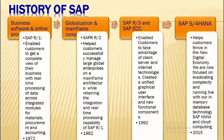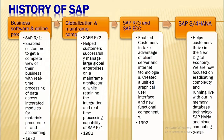SAP R/1 enabled customers to get a complete view of their business with real-time processing of data across integrated modules for materials, procurement, and accounting. SAP R/2 helped customers successfully manage large global enterprises on a mainframe architecture, while retaining integration and real-time processing. By 1982, SAP R/3 enabled customers to take advantage of client-server and internet technologies, creating a unified graphical user interface and new functional components. By 1992, it helped customers thrive in the new digital economy. Now, in 2015, SAP focuses on eradicating complexity with its in-memory database technology SAP HANA and Cloud Computing.